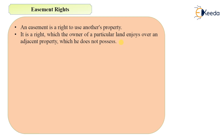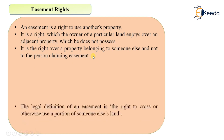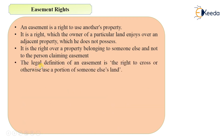You will get access or rights — and those are nothing but your easement rights. It is the right over a property which belongs to someone else and not to the person who is claiming the easement. The ownership of that property will be of someone else but another person will use it for his purpose. The legal definition of an easement right is the right to cross or otherwise use a portion of someone else's road or land. If you are using someone else's land for your purposes, some portion of that land may be used — that is your easement.